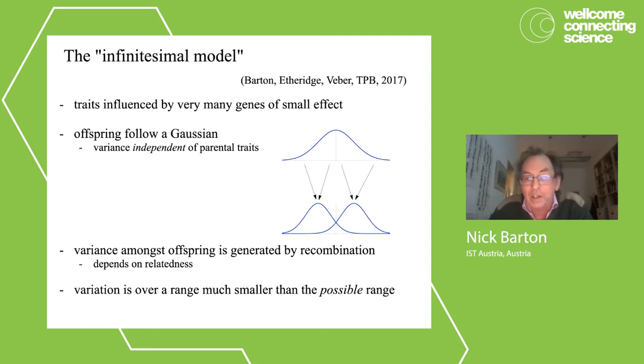So this independence of the variance amongst offspring from the values of the parents, which is a crucial simplification, that's simply a consequence of the fact that variation within a population is typically over a range much smaller than the possible range. So we can actually see that that is the case from the fact that if we select on a population, it will respond to selection for many, many generations and will change by 5, 10, 15 standard deviations, as witnessed by advances in agricultural yields. And so if we take a population, we know that from standing variation in that population, we can construct individuals which are way beyond the range in either direction. And therefore, the variation within the population that we see is much narrower than the range that is possible through selection. And that's essentially something we observe empirically. And that implies that the variation is due to many, many variants, each with small effect.